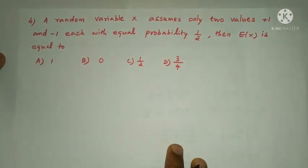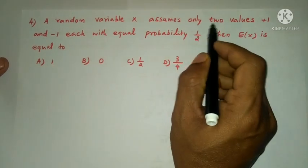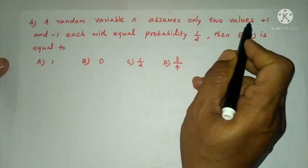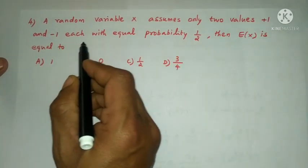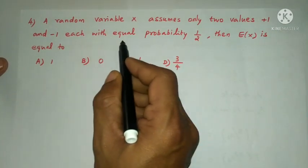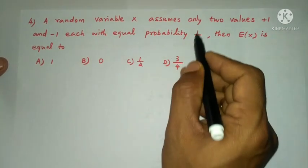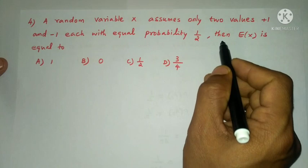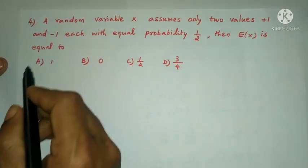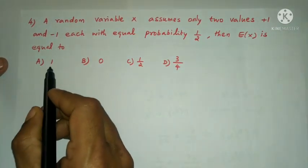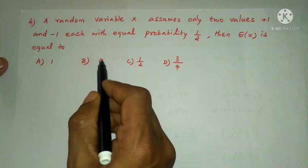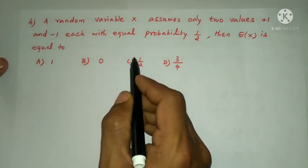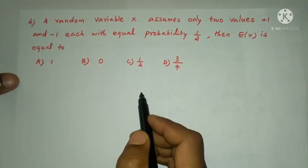Next question: a random variable X assumes only two values +1 and −1, each with equal probability 1/2. Then E(X) is equal to — options: 1, 0, 1/2, or 3/4.